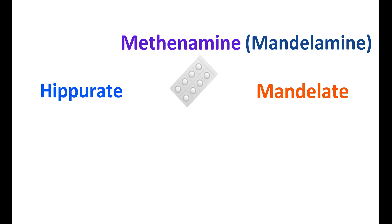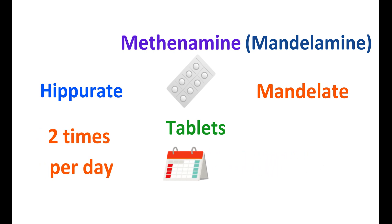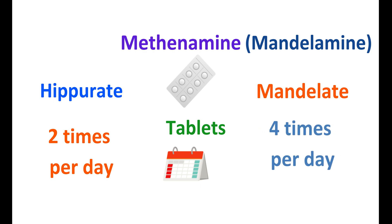Both of these salts are available as tablets; however, they are not equivalent due to their difference in the release of medication. The hippurate salt is given two times per day whereas the mandelate salt is given four times per day. Today in this video we will discuss how this drug works in treating urinary tract infections, important precautions, side effects, and doses.